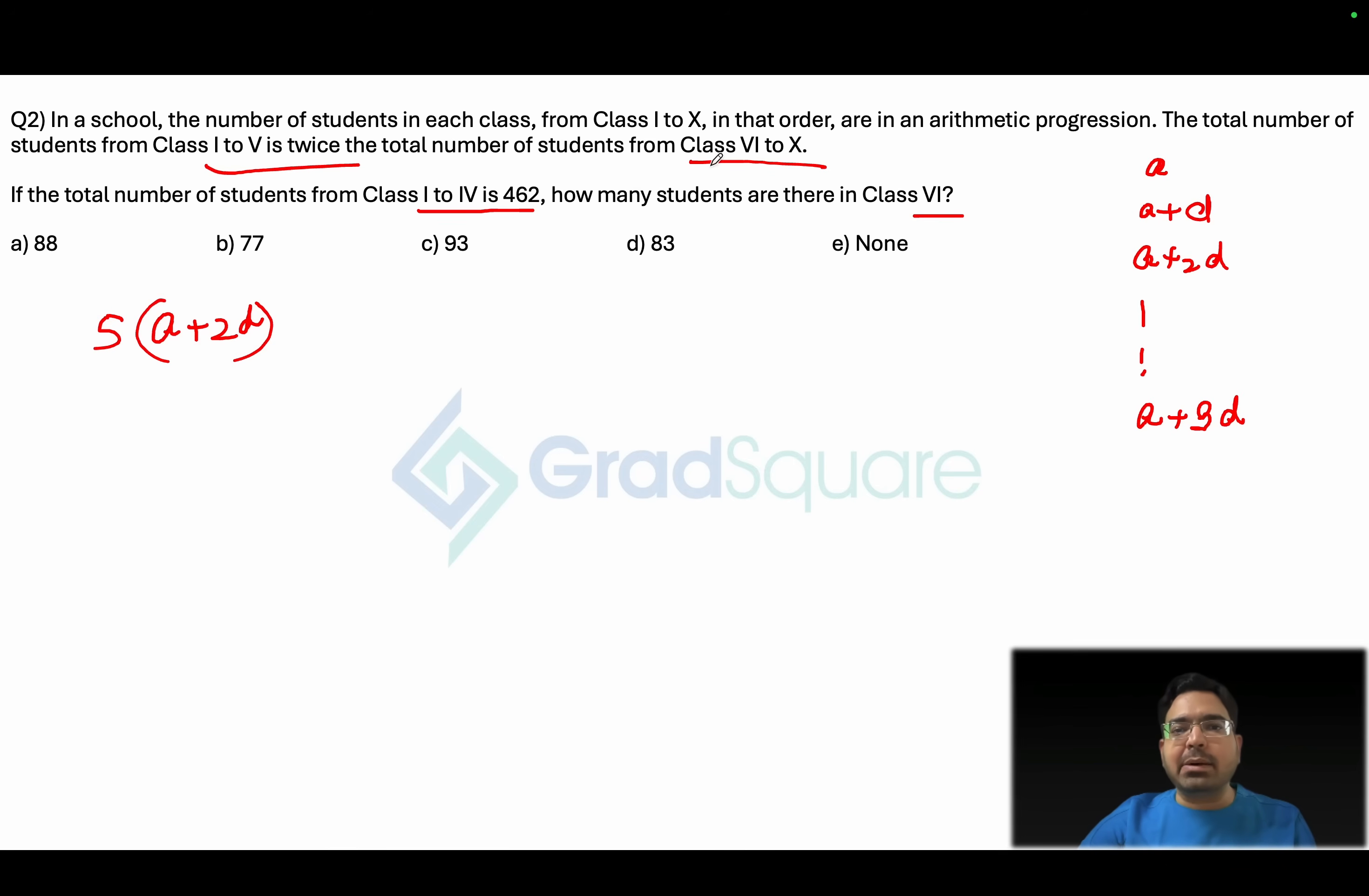Now similarly what is the sum of the number of students from class 6 to class 10? Class 6 to class 10, the average number of students in every class will be a plus 7d which is the eighth term, and five times of that will give you the number of students from class 6 to class 10. Class 1 to 5 is twice the number of students in class 6 to 10, so you will multiply this by 2.